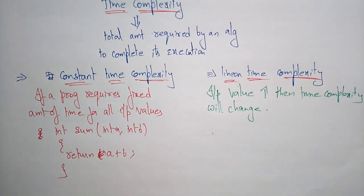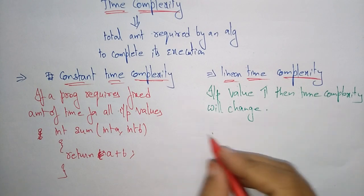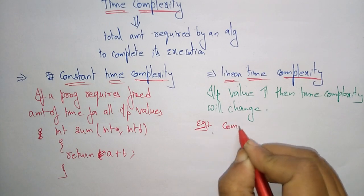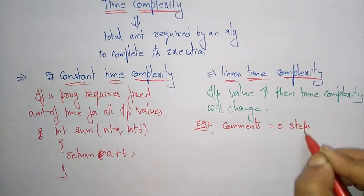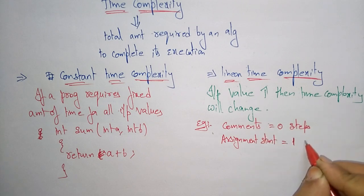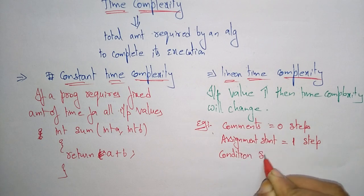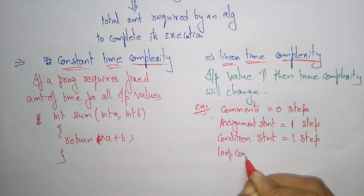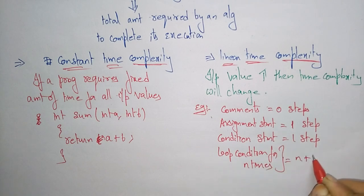To calculate linear time complexity, you need to follow certain steps. For comments in an algorithm or program, the time complexity is 0 steps. For assignment statements, it is 1 step. For condition statements, it is also 1 step. Whenever you are using loop conditions for n times, it should be n plus 1 steps.